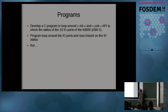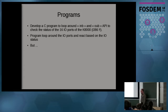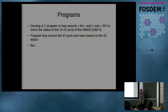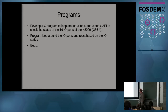I developed for the Wellman card a C program using the inb/outb API to look at those IOs — whether they are open or closed. It was easy to develop, very simple to build. It's essentially a big loop which looks at all those IOs, checks their status, and reads or sets them if you want — for example to activate a siren. This was nice, but there is a 'but' which I'll explain later.